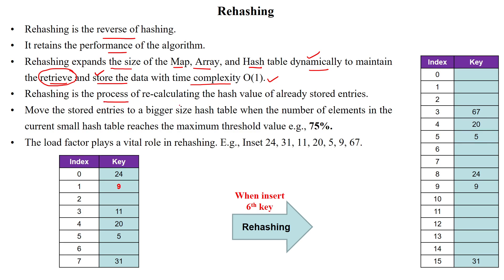Rehashing is defined as recalculating the hash value for already existing entries. For example, here we have 6 entries and the hash table size is 8. We fix some threshold value when inserting data into the hash table — a threshold value applied before increasing the hash table size. We have inserted 6 elements in this hash table, but we have some more elements to add.